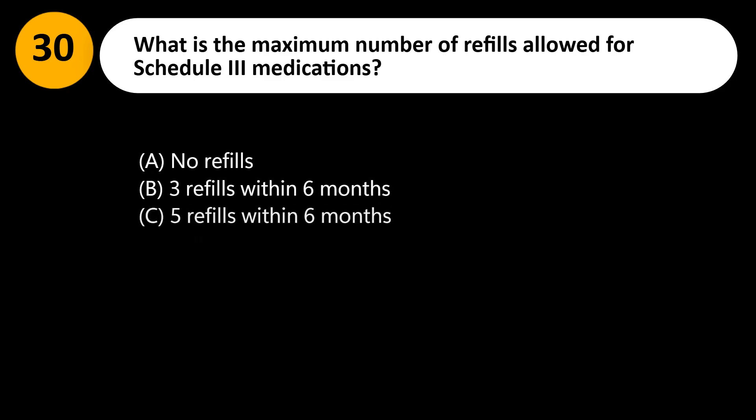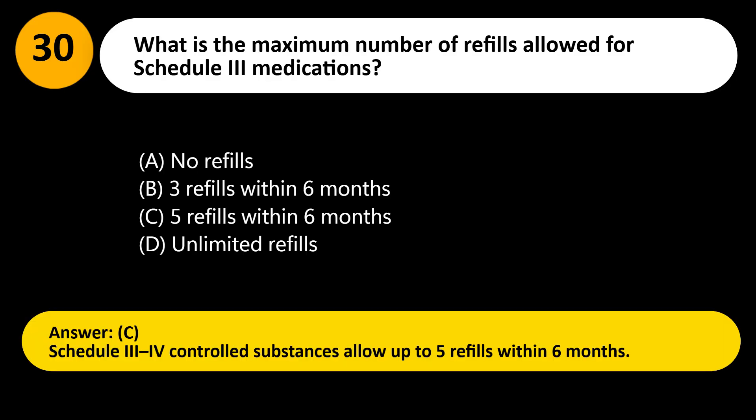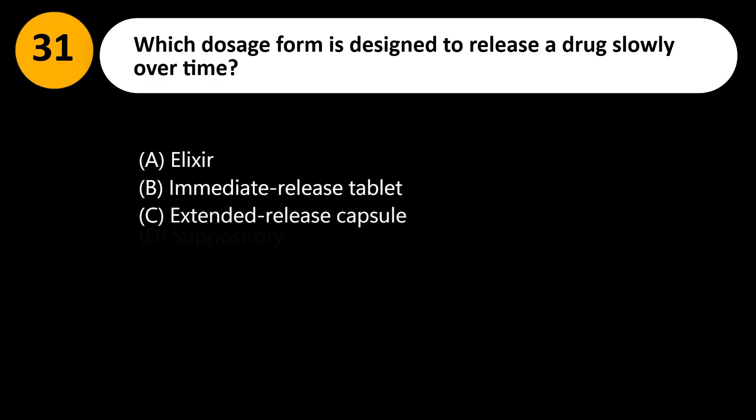What is the maximum number of refills allowed for Schedule 3 medications? A. No refills. B. Three refills within six months. C. Five refills within six months. D. Unlimited refills. Answer: C. Schedule 3 and 4 controlled substances allow up to five refills within six months.